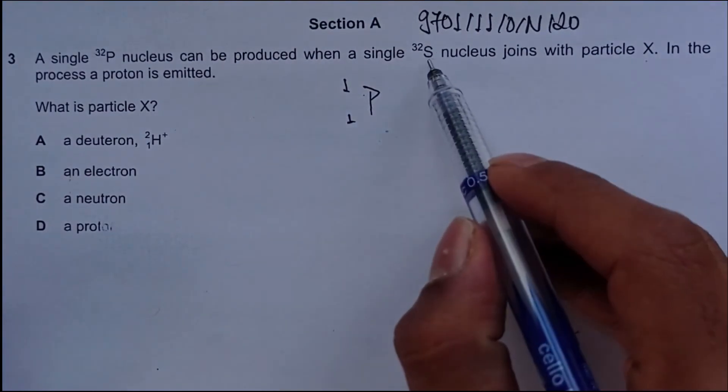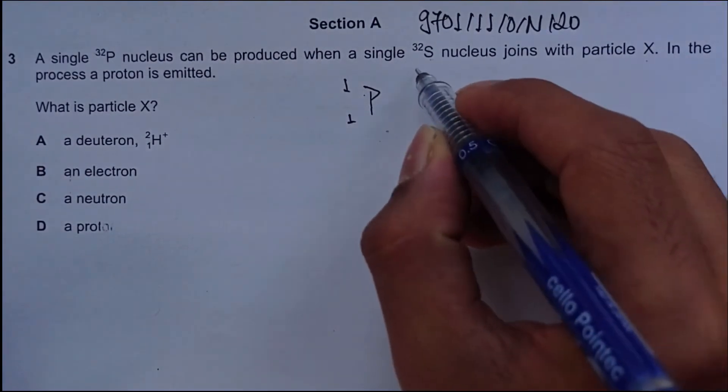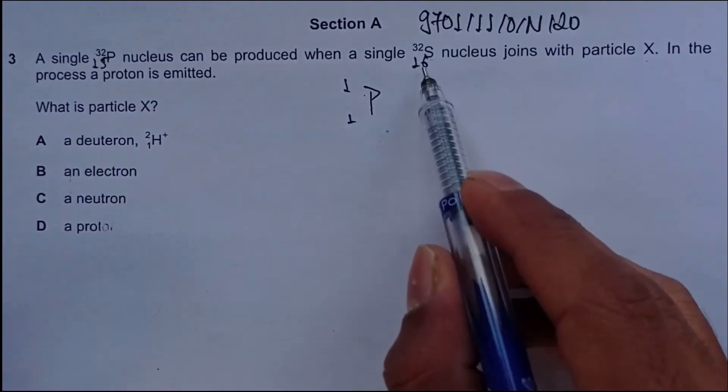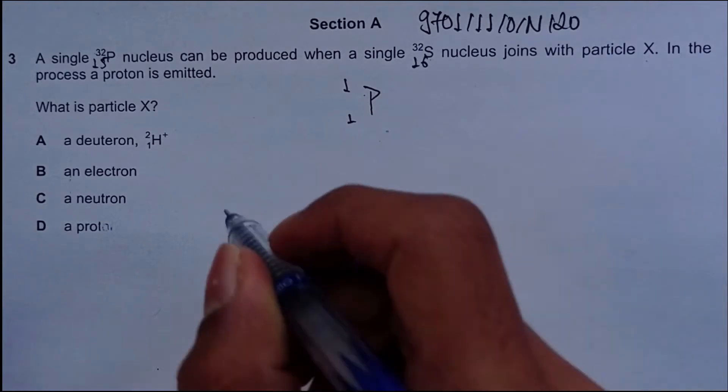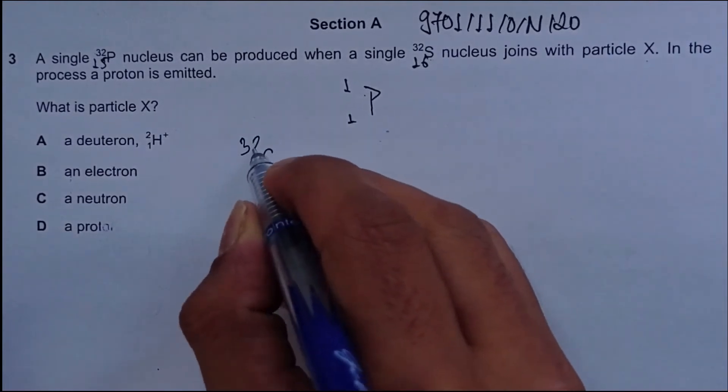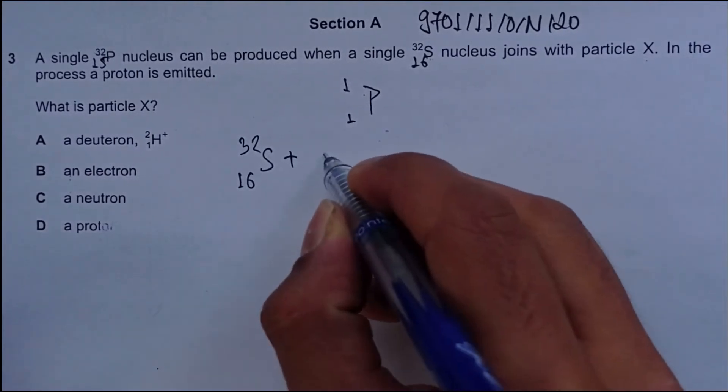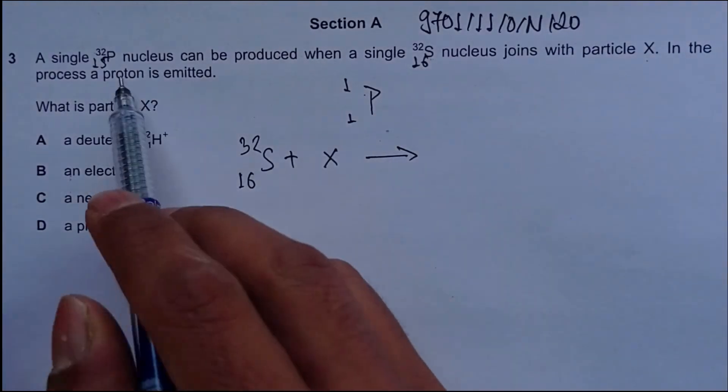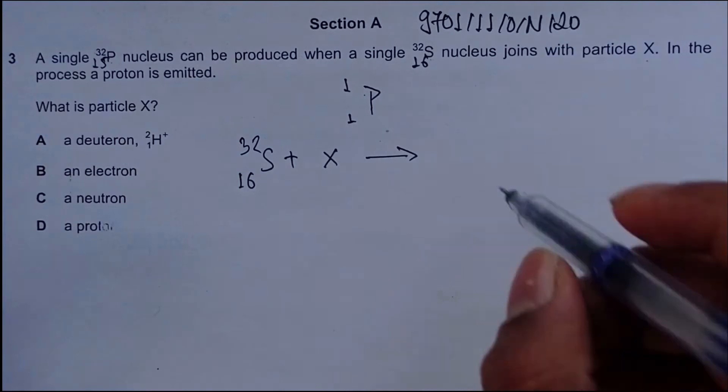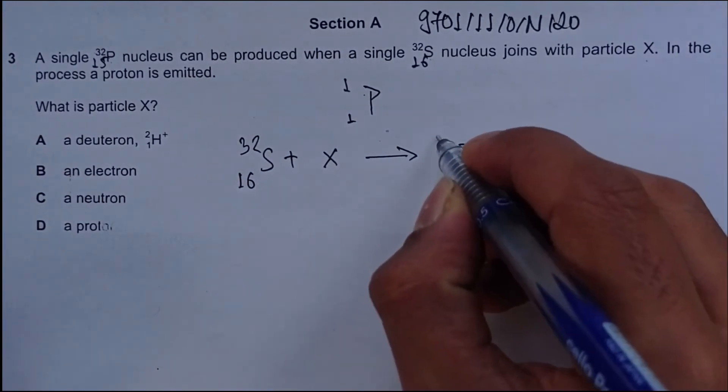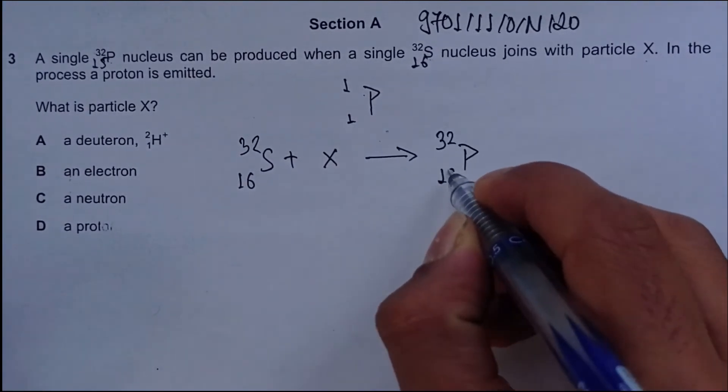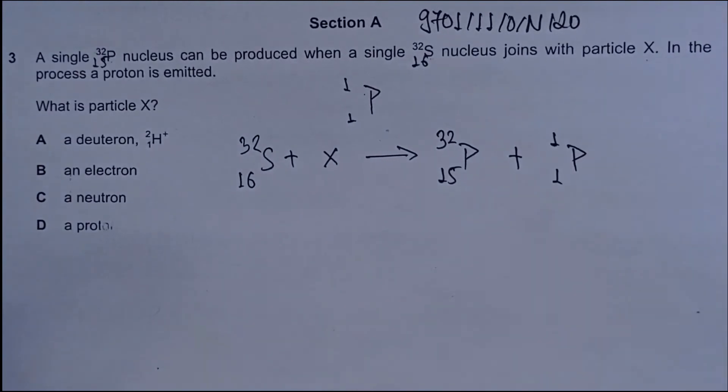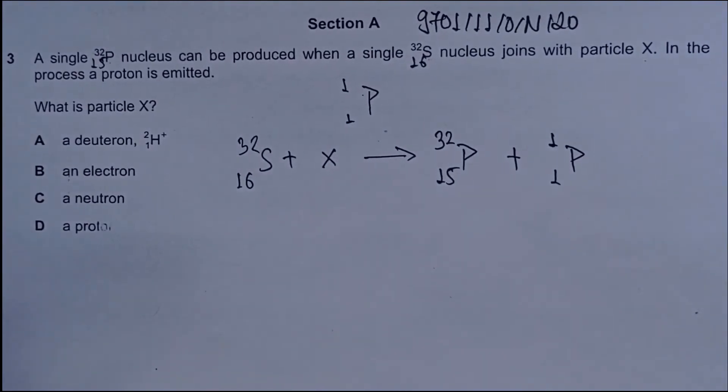The proton number of sulfur is 16 and phosphorus is 15. So what we have is sulfur joining with particle X. In the process, a proton is emitted and phosphorus-32 nucleus is also there. Phosphorus-32 has proton number 15. Proton is H+, which is also the hydrogen ion.